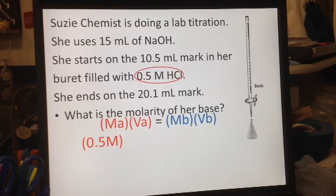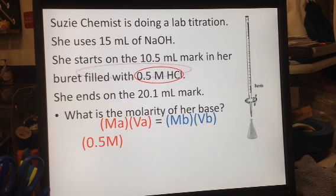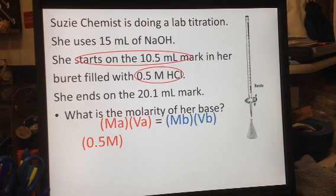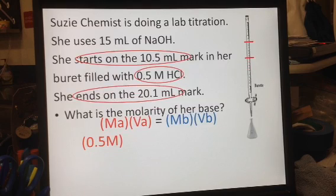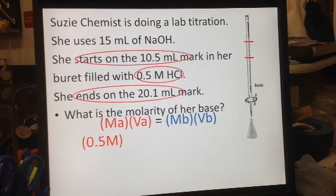The next thing I need to find out is the volume of my acid. It doesn't outright tell me the volume. It tells me that she started at 10.5 milliliters, that's where she started, that's when the acid in her burette was at, and when she got to her titration endpoint, it was on the 20.1 mark.